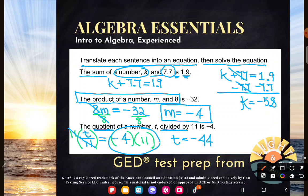Beautiful. So the equation was T over 11 is equal to negative 4. And the solution there is T is equal to negative 44. Great. See?